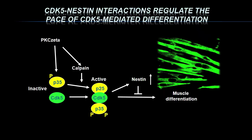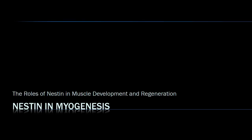Summarizing a lot of data: nestin sits at the end of a process where an upstream activator drives CDK5, and CDK5 determines the expression and positioning of nestin, while nestin in turn determines the activity of CDK5. So the concept is that nestin is regulated by CDK5 and regulates CDK5 — the kinase regulates its own scaffold and its own regulator. Now let's see what happens when we take these results into the knockout mouse model.